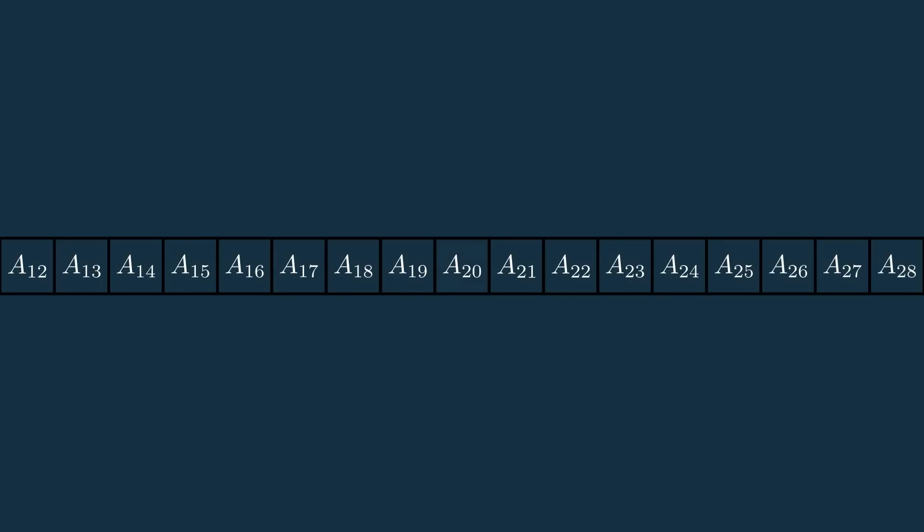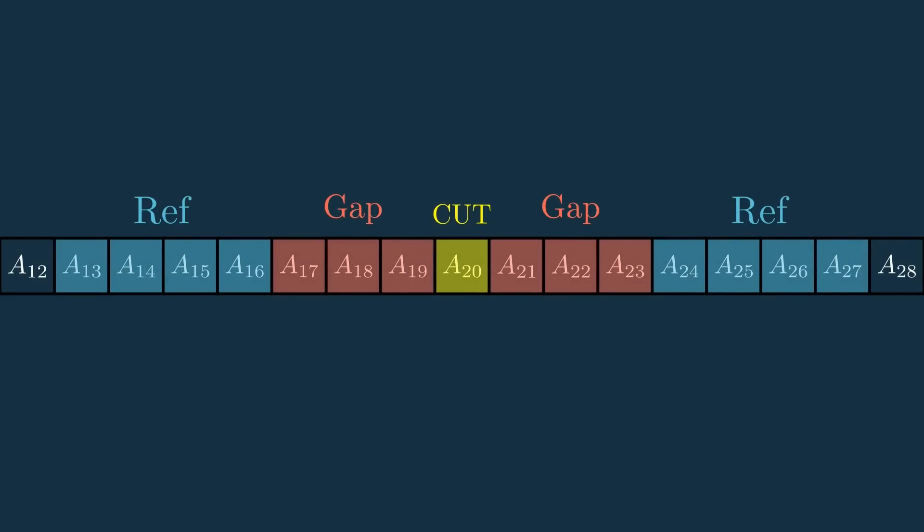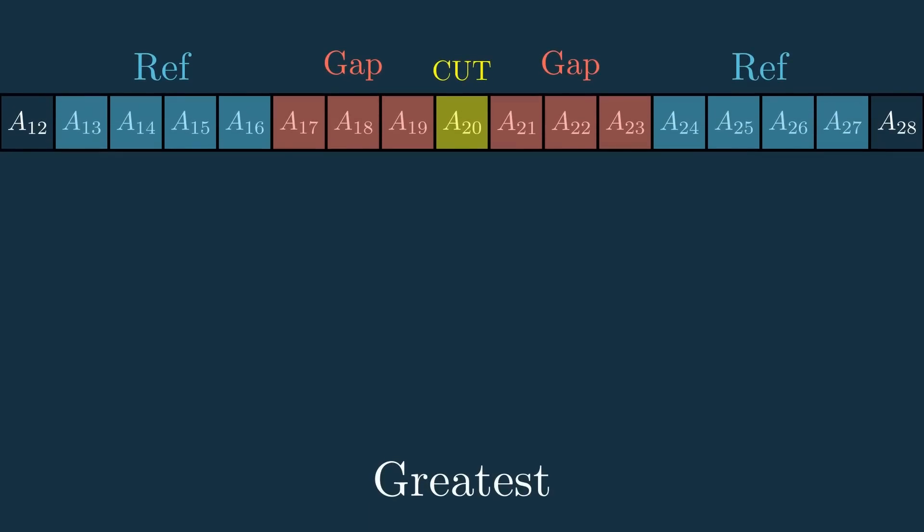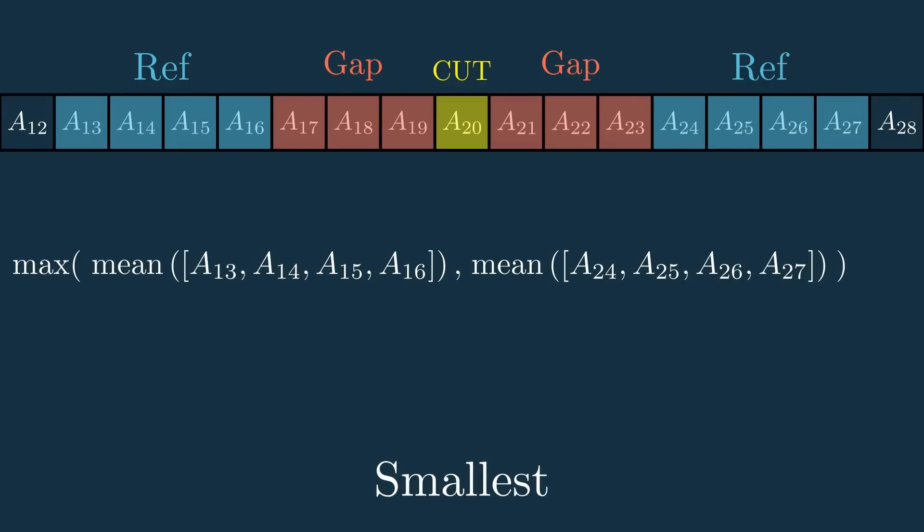Also, you have the option of using something other than the simple cell averaging technique that we used in this video. A couple other options include the greatest technique, where only the cells on the side of the CUT with the greatest mean amplitude are considered. Or the similar but opposite smallest technique, which does the same thing but uses the side with a smaller mean amplitude. There's even more that I won't cover here, but you can read about them in the description.